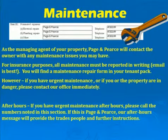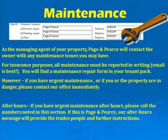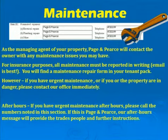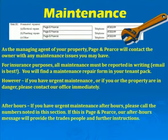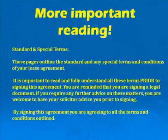As a managing agent, we will contact the owner with any maintenance requests or issues you raise with us. For insurance purposes, all maintenance must be reported in writing — an email is great. You'll find a maintenance repair form in your tenant pack. However, if you have urgent maintenance or if you or the property are in danger, please contact our office immediately. After hours, if you have urgent maintenance, please call the numbers noted in this section and our after-hours message will provide tradespeople details and further instructions.